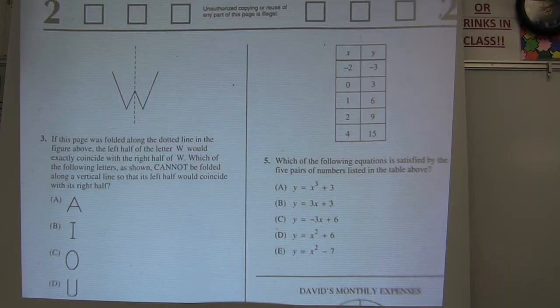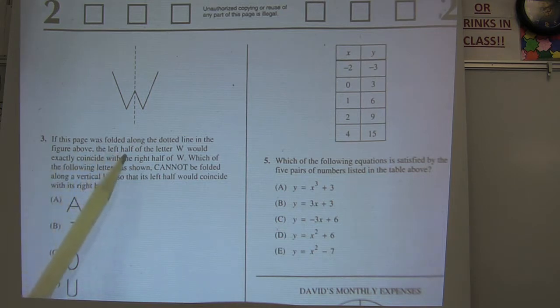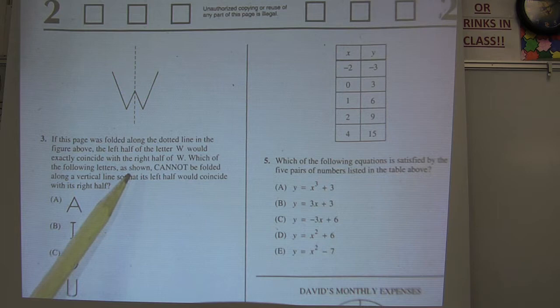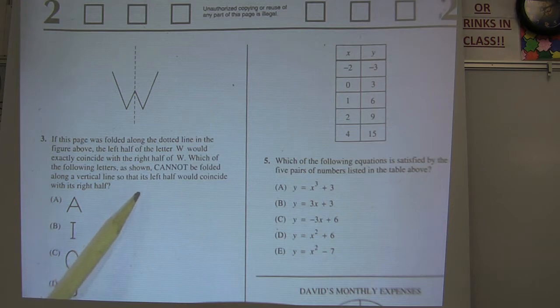Section 2, numbers 3 through 6. Okay, here we go. Number 3 says if this page was folded along the dotted line in the figure above, the left half of the letter W would exactly coincide with the right half of W. Which of the following letters as shown cannot be folded along the vertical line so that the left half would coincide with the right half?